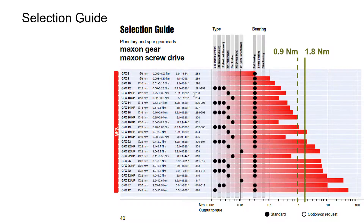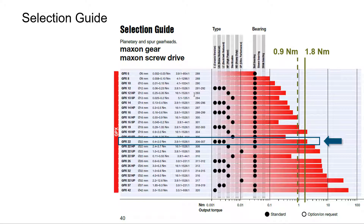We will focus here on the newer gearhead families — the online configurable GPX — that can be found in the lower part of the selection guide. Again, gearheads large enough to fulfill our torque requirements start at 22 mm diameter.